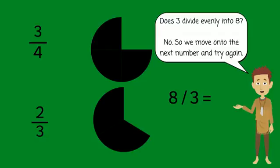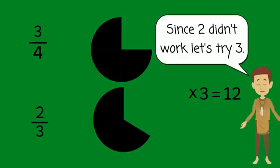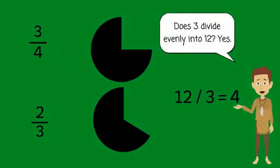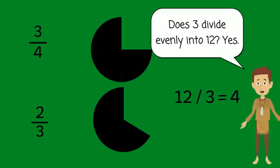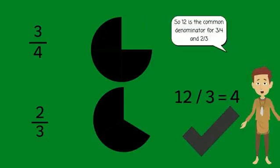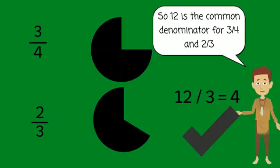So we move on to the next number. Multiply the larger denominator 4 by 3 to get 12. Does 3 divide evenly into 12? The answer is yes. So 12 is the common denominator of the denominators 4 and 3.